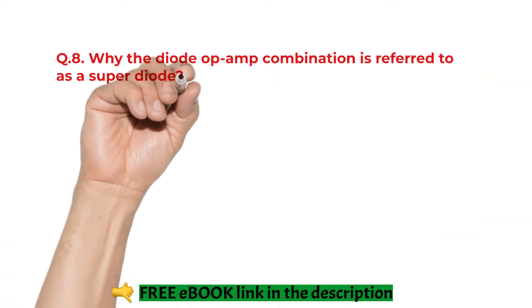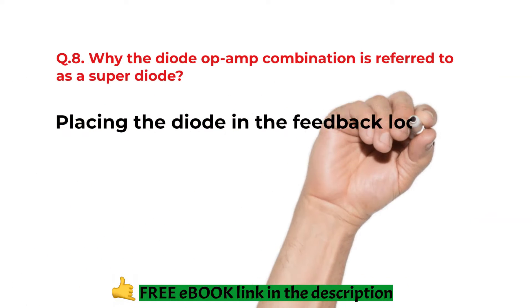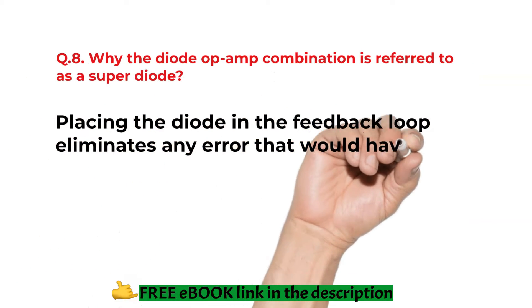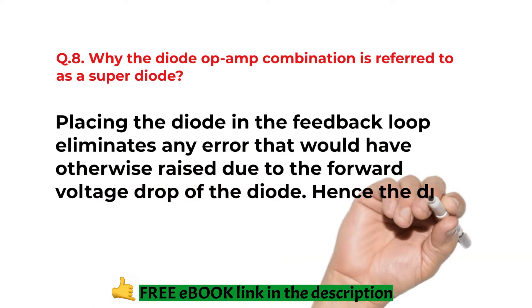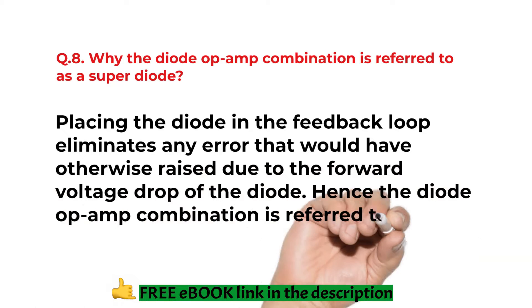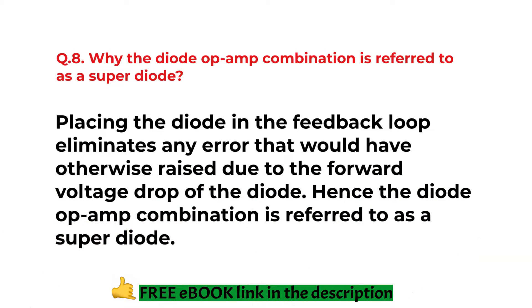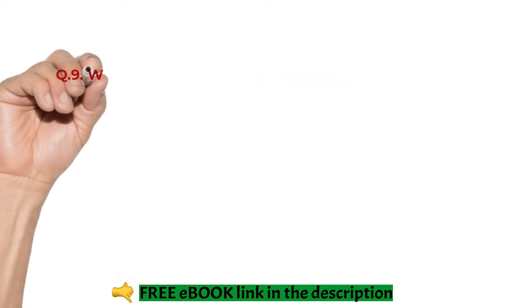Why the diode op-amp combination is referred to as a super diode? Placing the diode in the feedback loop eliminates any error that would have otherwise raised due to the forward voltage drop of the diode. Hence, the diode op-amp configuration is referred to as a super diode.